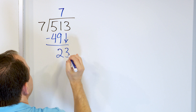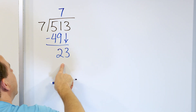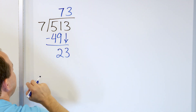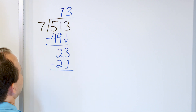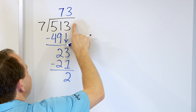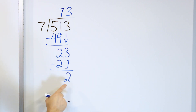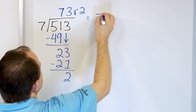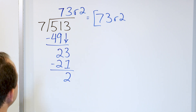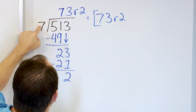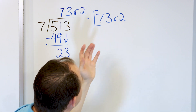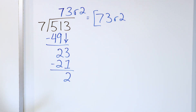After subtracting, drag the next number down: 23. 7 times 3 is 21, and 7 times 4 is 28 — that's too large. So 7 times 3 is 21. Multiply, get 21 down here and subtract: 3 minus 1 is 2, and 2 minus 2 is 0. Grab the next digit but there is none, and 2 is less than 7, so that's my remainder. The answer is 73 remainder 2. If I had 513 buffaloes and put them into 7 zoos, every zoo would have 73 buffalo evenly with 2 left over.